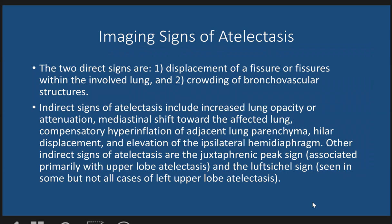Indirect signs of atelactasis or collapse include increased lung opacity or attenuation, mediastinal shift toward the affected lung, compensatory hyperinflation of the adjacent lung parenchyma, elevation of the ipsilateral diaphragm, the juxtaphrenic peak sign associated primarily with upper lobe collapse, and the loft shield sign seen in left lower lobe collapse.